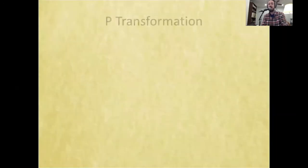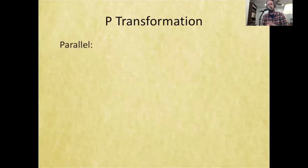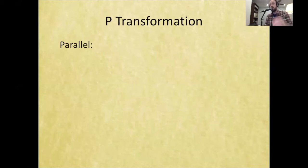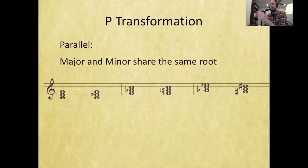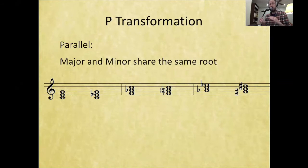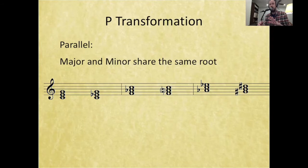The first transformation is P—the P transformation stands for parallel. When we talk about this parallel transformation, a major and a minor triad are going to share the same root. All of these transformations involve going from a major triad to a minor, or a minor to a major. They do not go major to major, and do not go minor to minor.